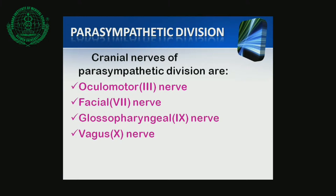The fibers of the sacral outflow arise from the S2 to S4 segments of the spinal cord. Thus the pre-ganglionic fibers of the parasympathetic division arise from neurons situated at three different levels: the tectal or midbrain level (third cranial nerve), the bulbar level or bulbar outflow, and the sacral outflow.